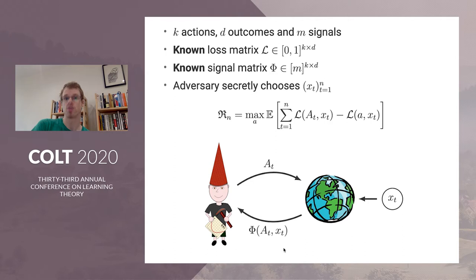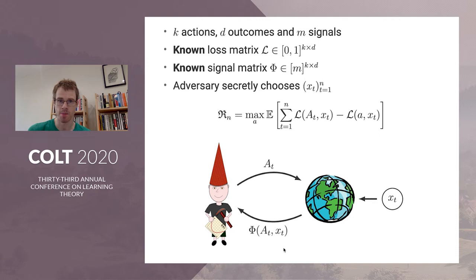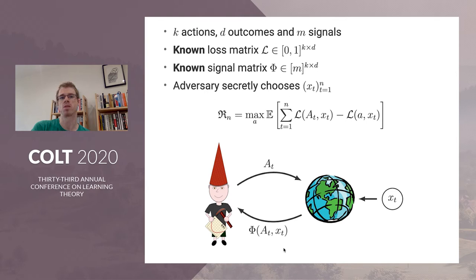The adversary is going to secretly choose a sequence of outcomes — this is the oblivious adversarial setting. In each round you choose an action, and the environment gives you feedback which depends on the action and the outcome chosen by the adversary, looked up in the signal matrix. The feedback you get is phi of A_t, X_t, and the main point is you don't get to observe the loss or X_t. As in bandit problems, your goal is to minimize regret, measuring the difference between the expected sum of losses you get and the sum of losses of the best single action.